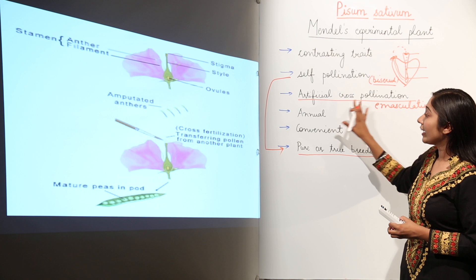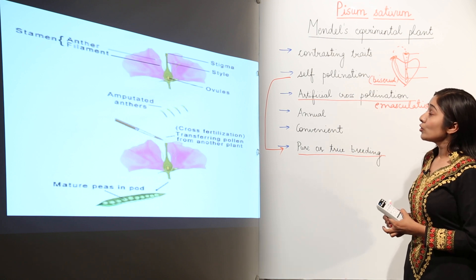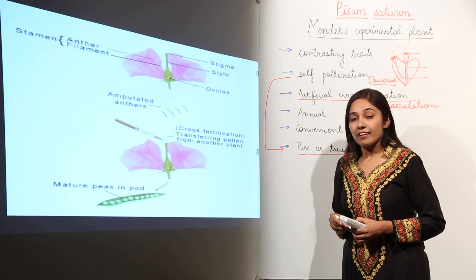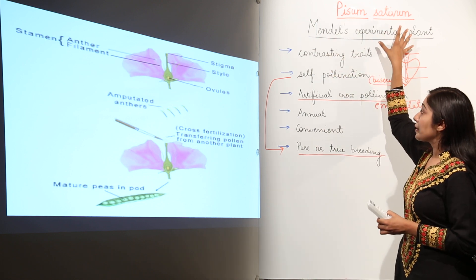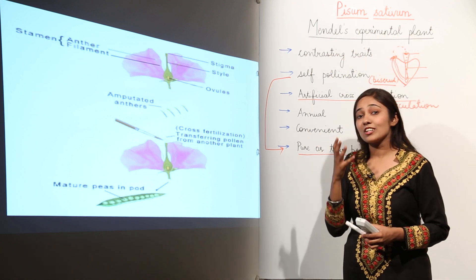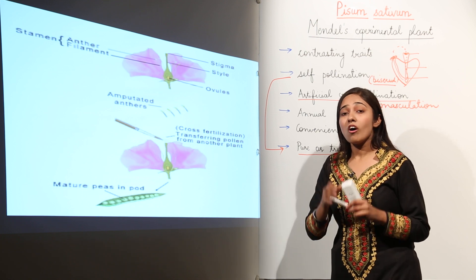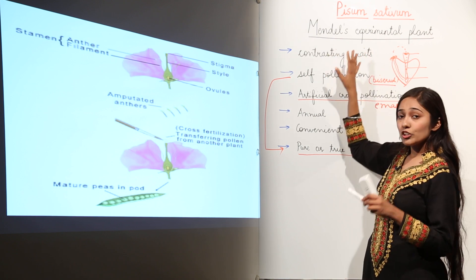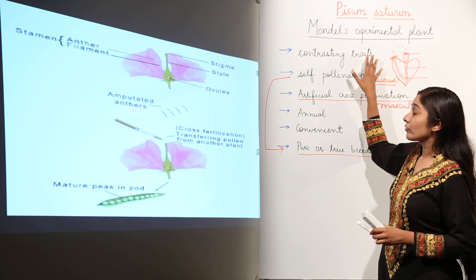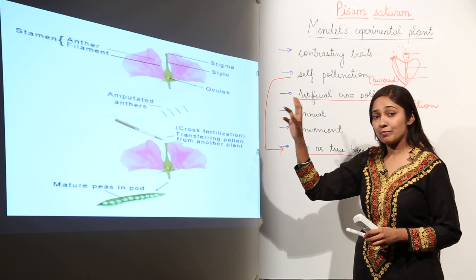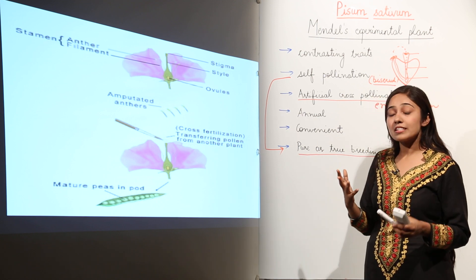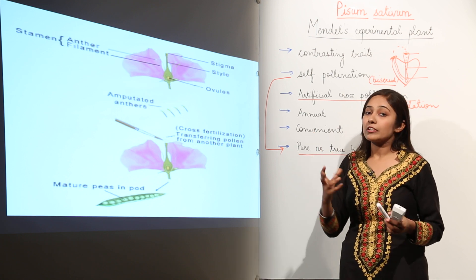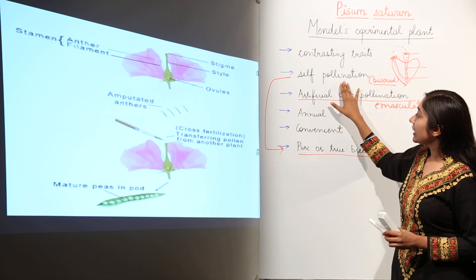These are the reasons why Mendel chose the pea plant as his experimental plant. Pisum sativum gave us the basic laws of heredity because all experimental work done by Mendel was on this plant. To summarize: firstly, it had contrasting traits — the seven basic contrasting traits such as tall versus dwarf plants, yellow versus green cotyledons, and so on.